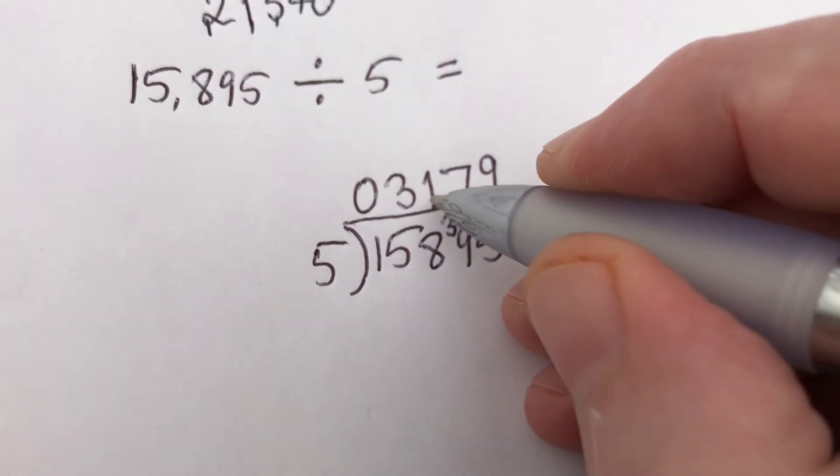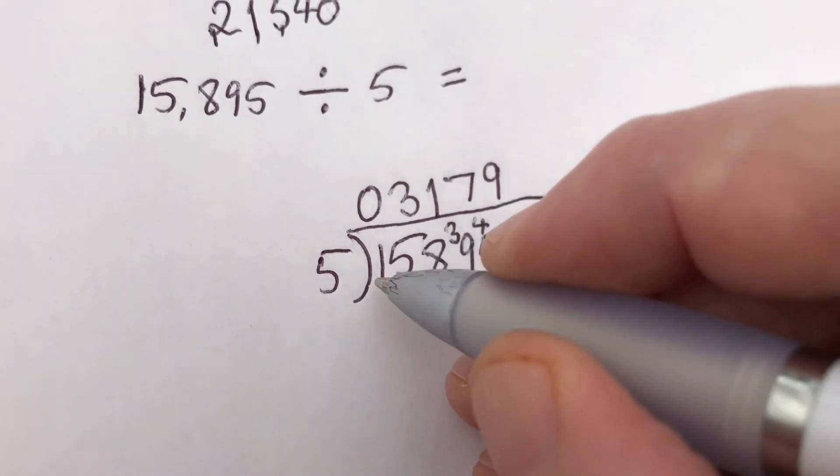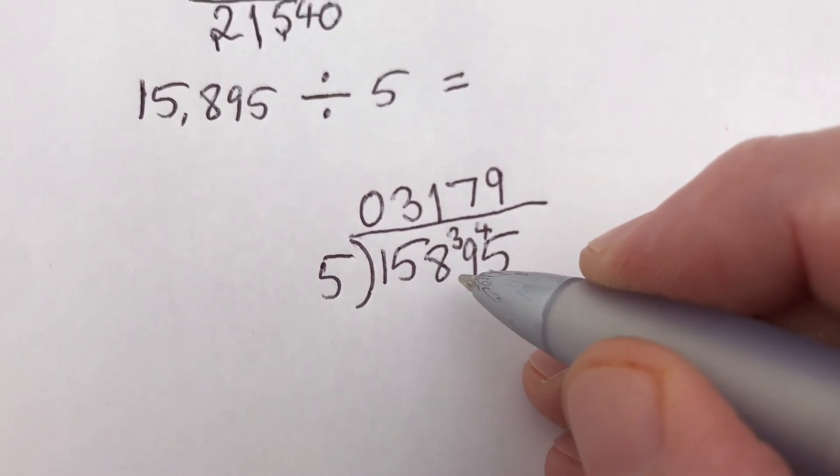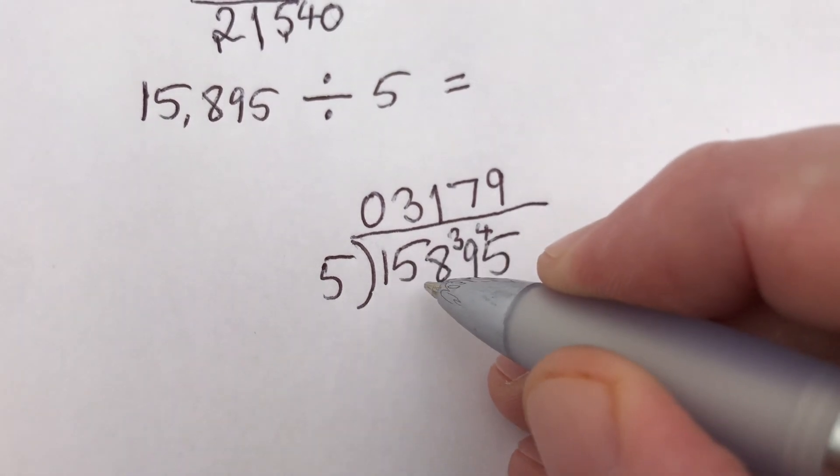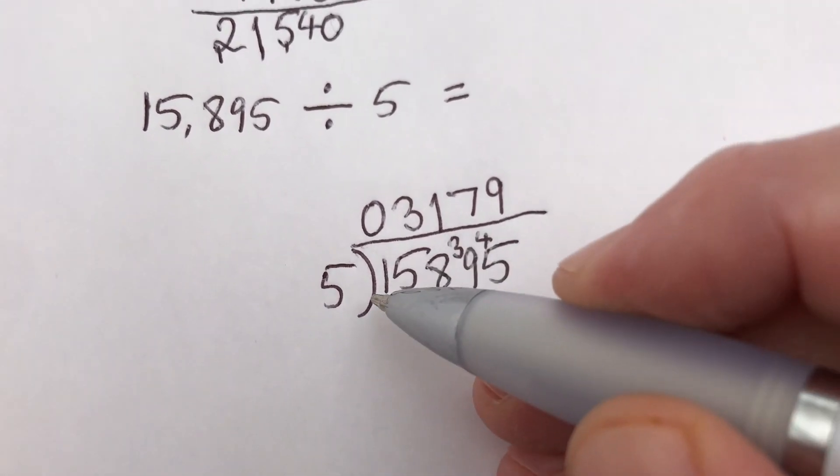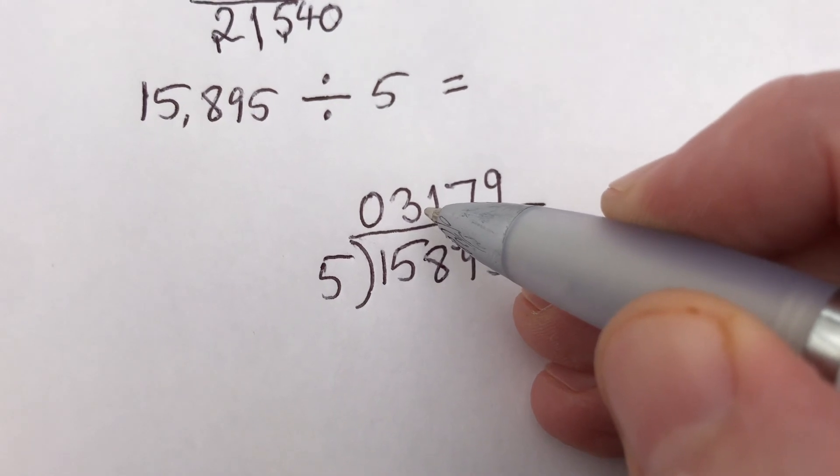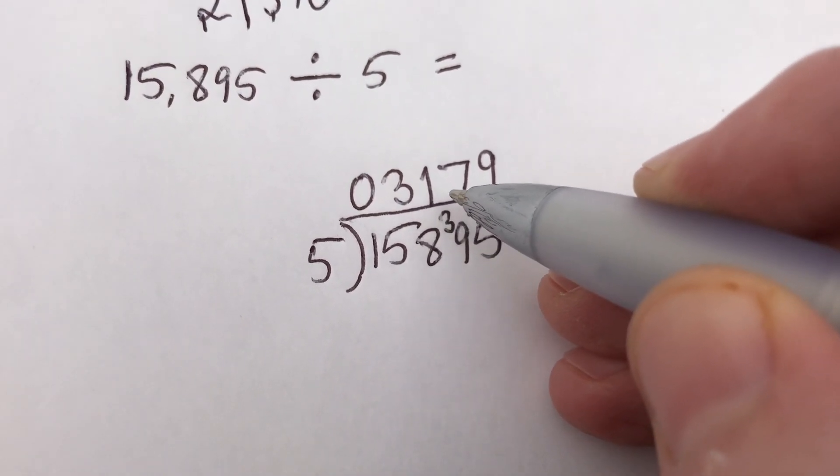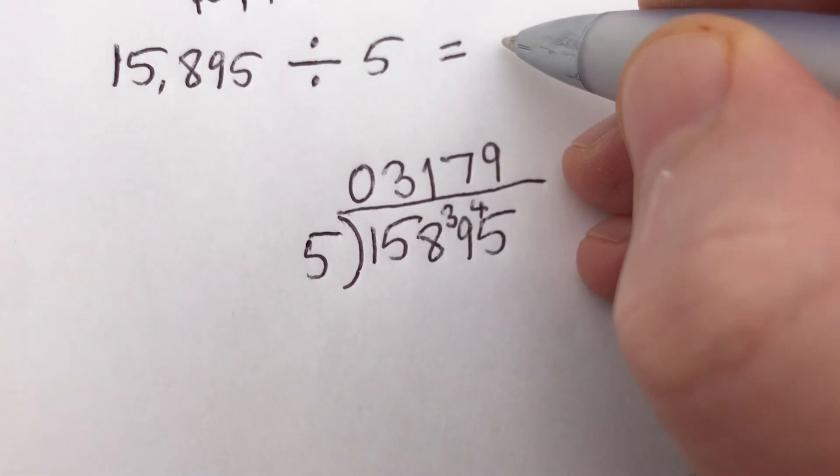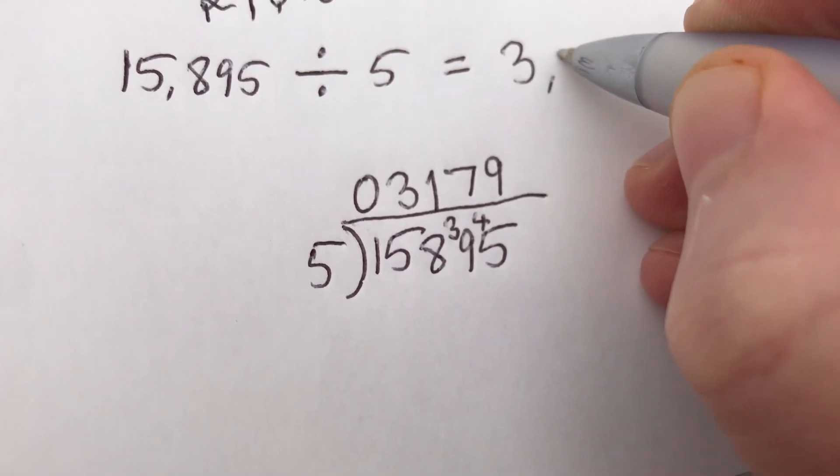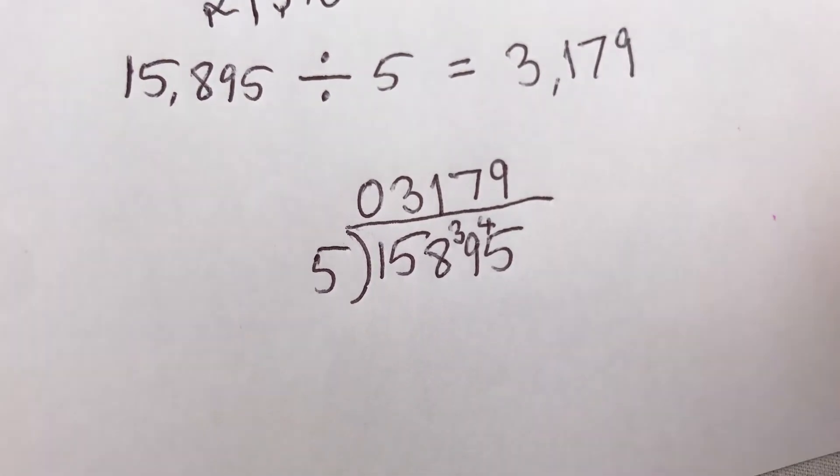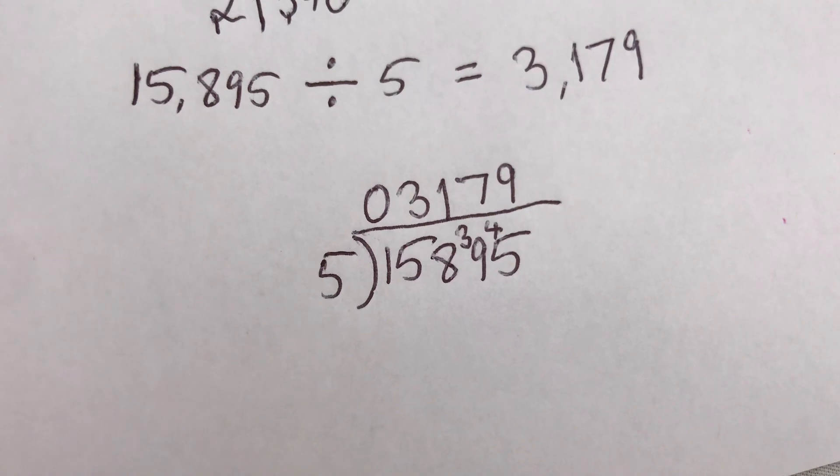So therefore, the answer is 5 into 15,895. So 15,895 split up into 5 amounts would be 5 lots of 3,179. Thanks for watching.